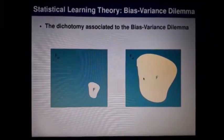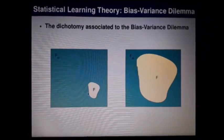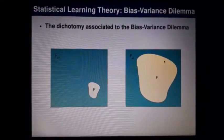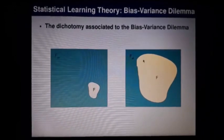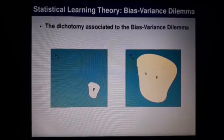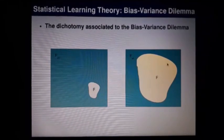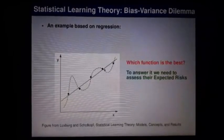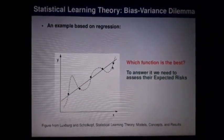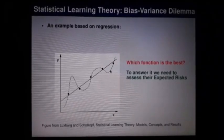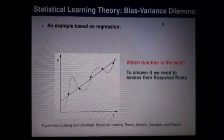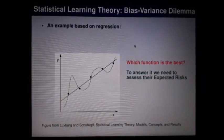Sometimes people think a classification algorithm should consider as many functions as possible — like the weaker bias on the right — but that's not true. If you consider too many functions, you'll most probably converge to a classifier or regression function that behaves like a high-order polynomial, capable of reaching zero error on your sample.